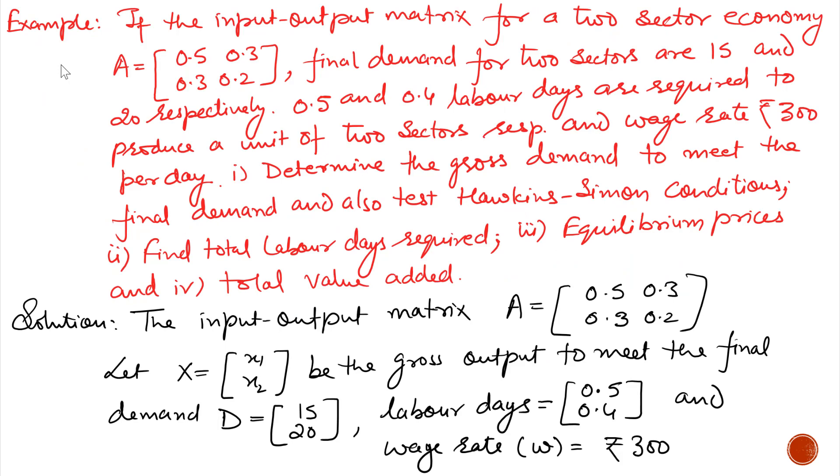Now the Leontief Input-Output Model, we will explain by one example. If the input-output matrix of a two-sector economy is given by A = [0.5, 0.3; 0.3, 0.2], final demand of the two sectors are 15 and 20 respectively. 0.5 and 0.4 labor days are required to produce a unit of the two sectors respectively, and the wage rate is 300 rupees per day.